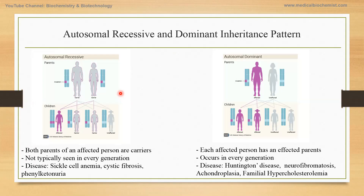Let's talk about the autosomal recessive and dominant inheritance pattern. When we talk about autosomal, it's mainly associated with the somatic chromosomes. In the case of autosomal recessive, when the children are affected, they are only affected with homozygosity — that means when both alleles are mutated, then they show the disease pattern. To be affected with a recessive type of disorder, both parents should be carriers.